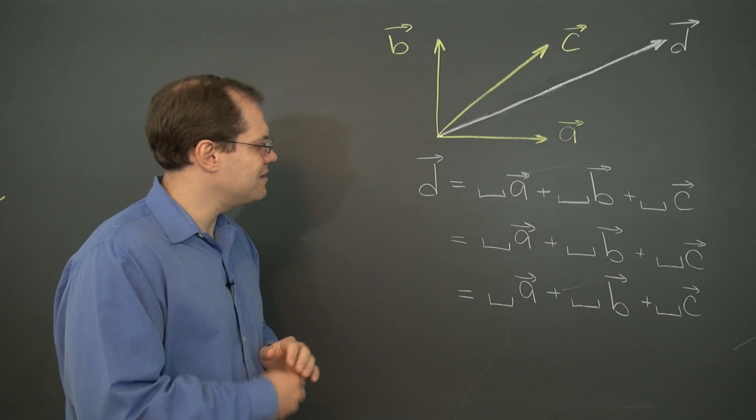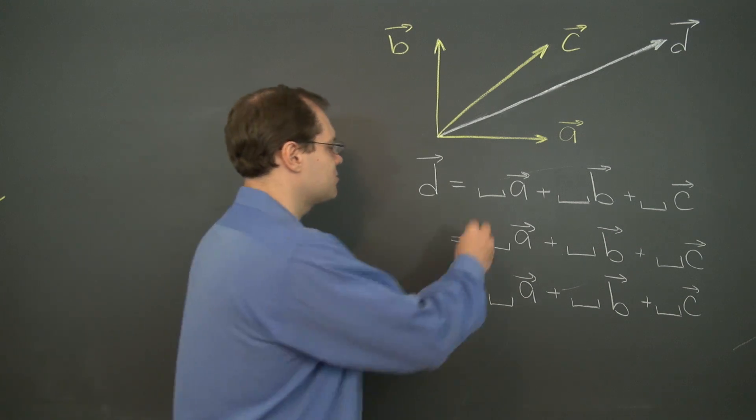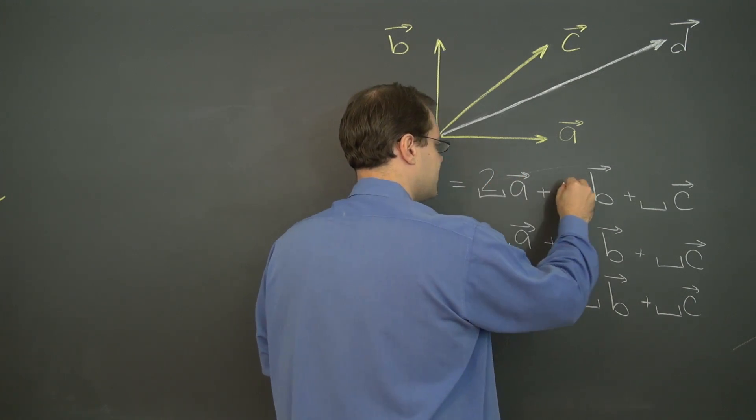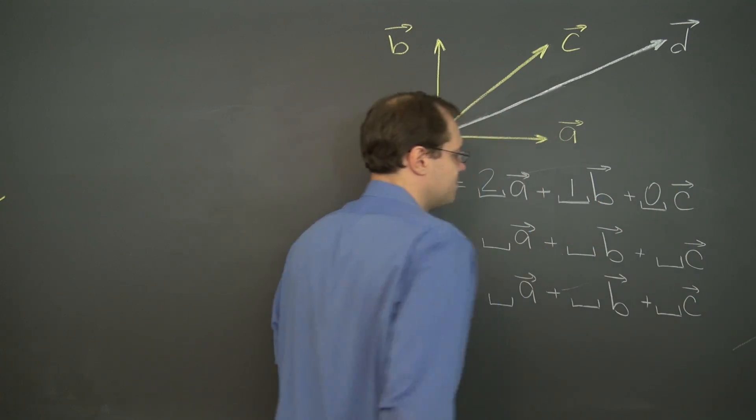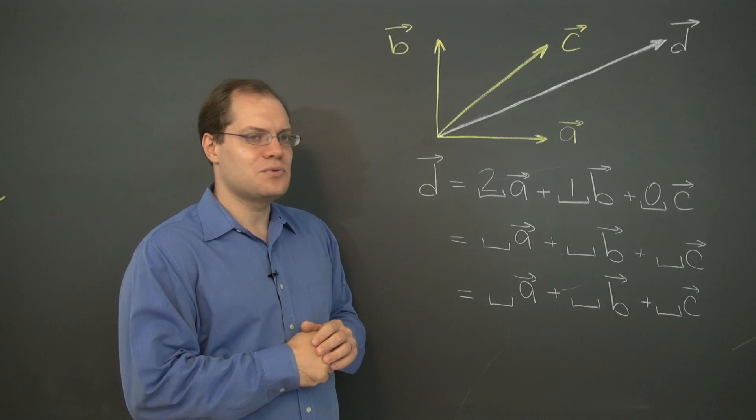I'll bet most of you thought of that linear combination first. So let's write it in: 2a plus 1b and none of c. Okay, that's one.